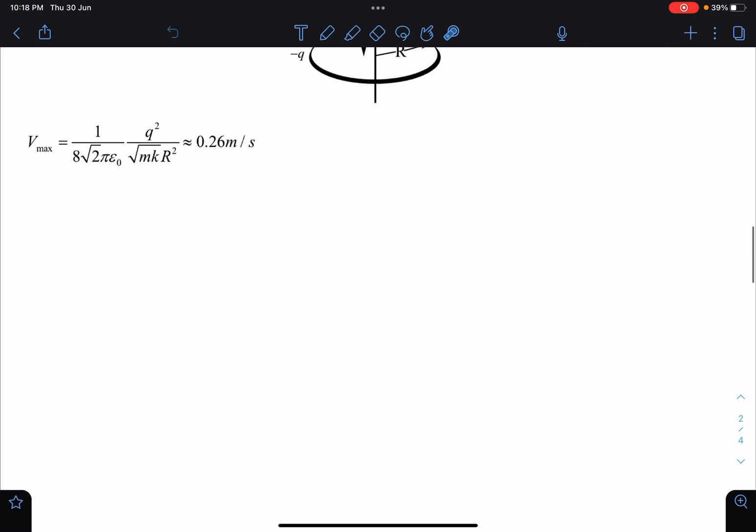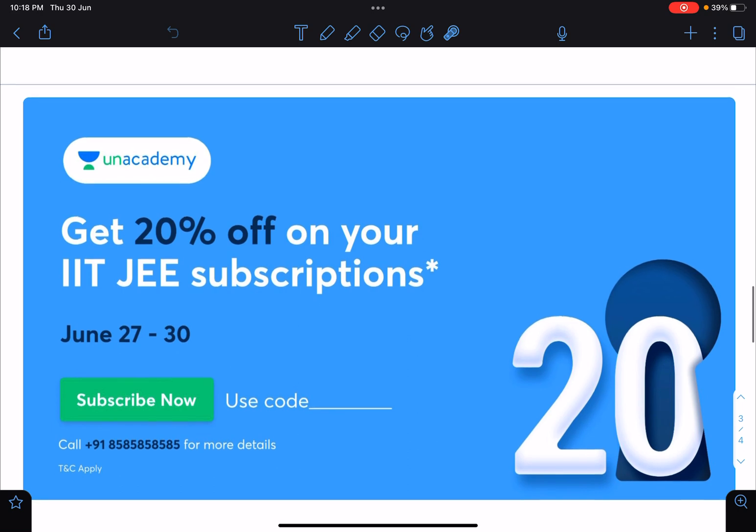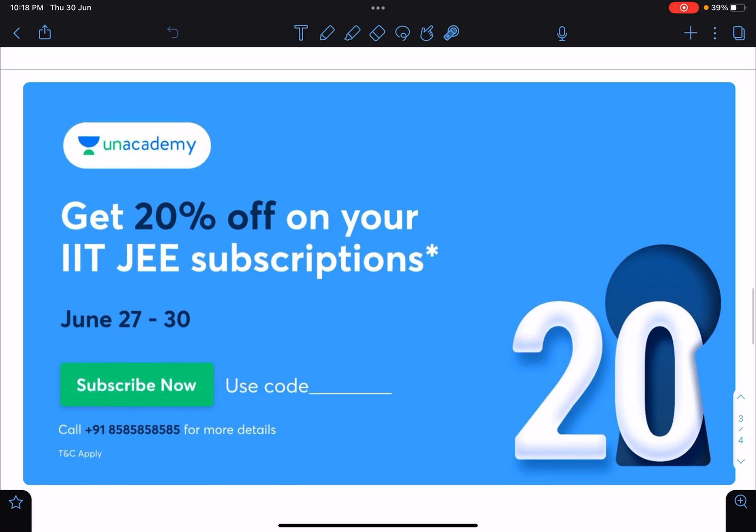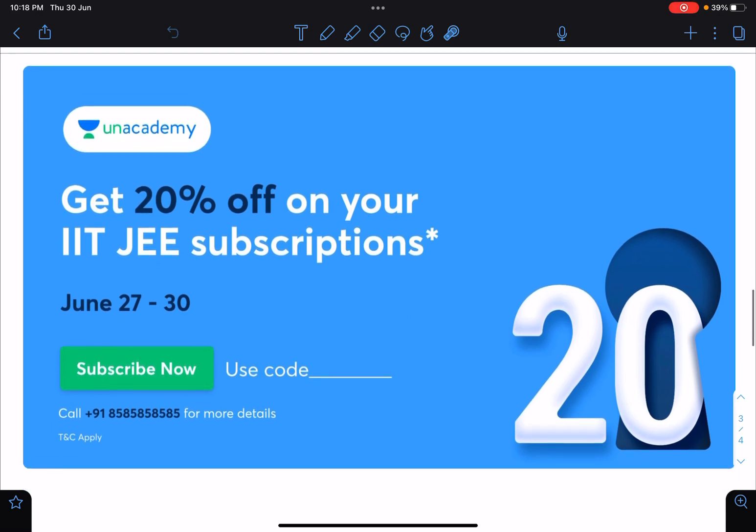So guys, this Unacademy 20% off or 20 unlock offer, it is ending tonight. So two more hours are left. So if you want to connect with me for the classes, you can use my code NITIN sir.